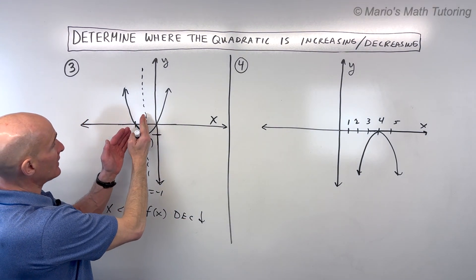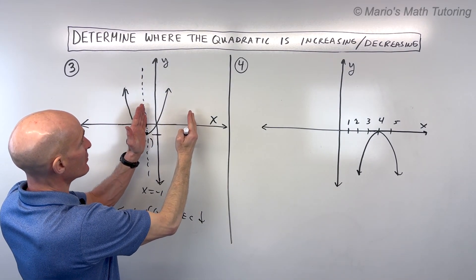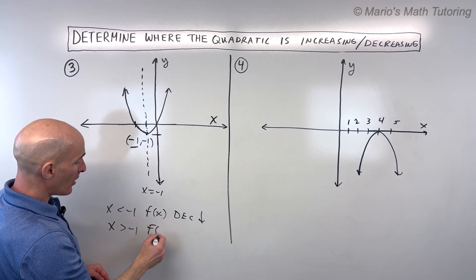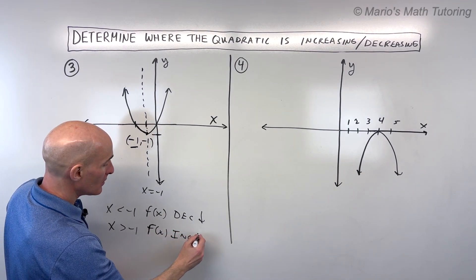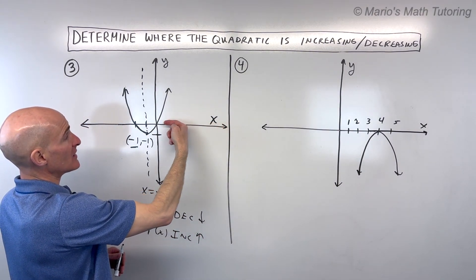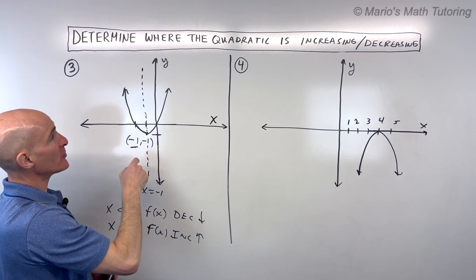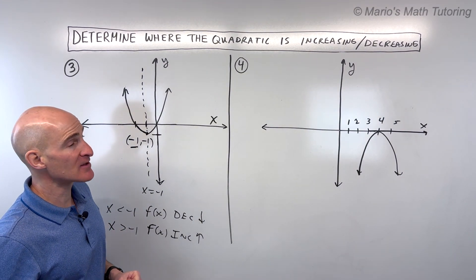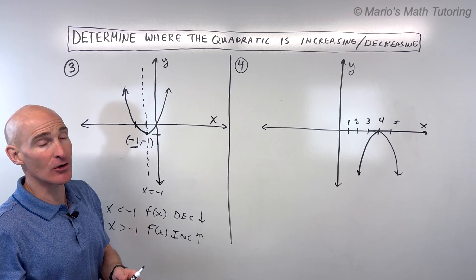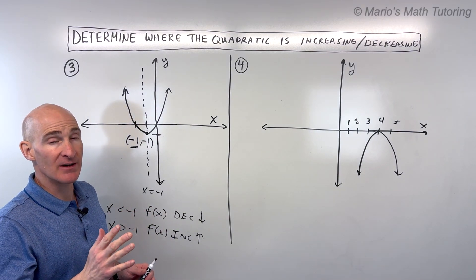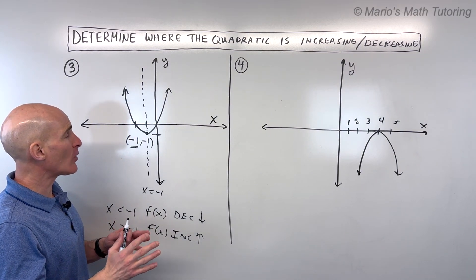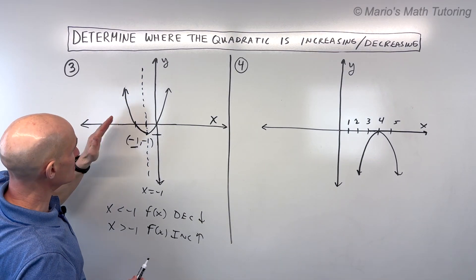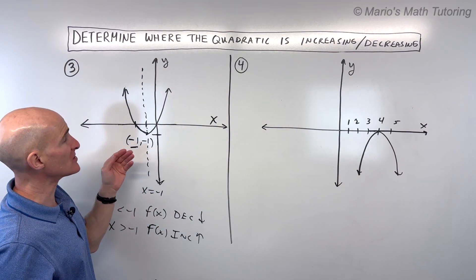When x is greater than negative 1, so when we're to the right of this axis of symmetry, as we're moving from left to right, those y-values are increasing. You don't want to think about reading it right to left, or focusing on the y-values, or thinking about where it's above or below the x-axis — that's a different problem altogether. Here we're talking about where the graph is increasing or decreasing: where are the y-values decreasing as we move from left to right, or increasing as we move from left to right.